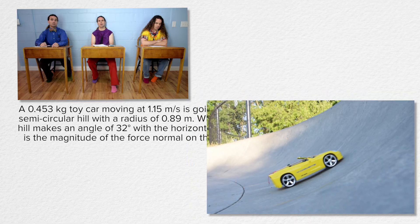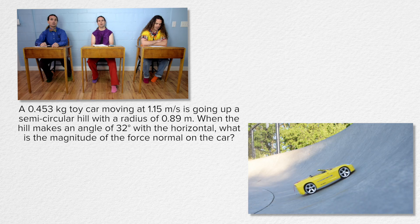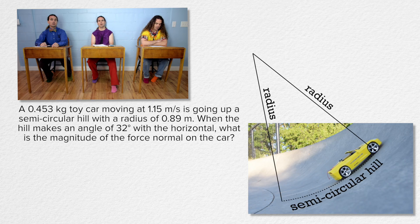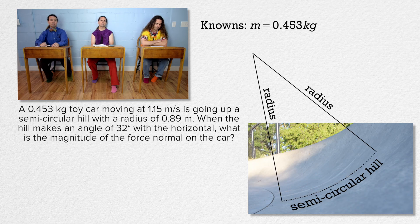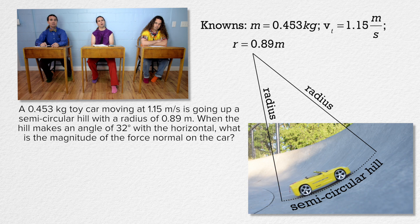A 0.453 kilogram toy car moving at 1.15 meters per second is going up a semicircular hill with a radius of 0.89 meters. Mass equals 0.453 kilograms, tangential velocity equals 1.15 meters per second, and radius equals 0.89 meters.